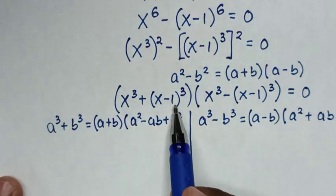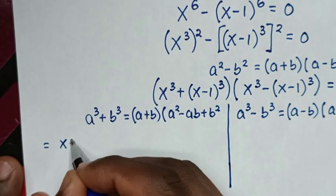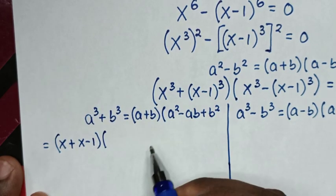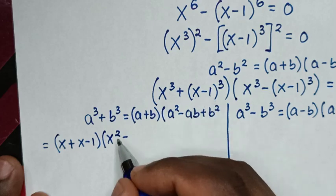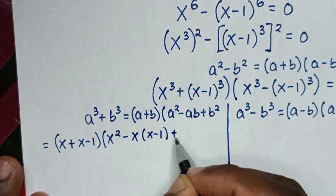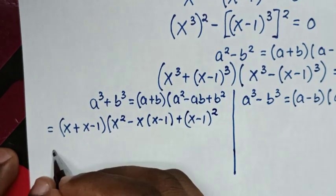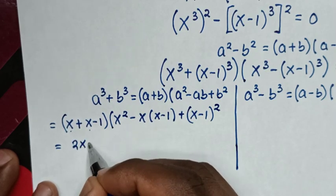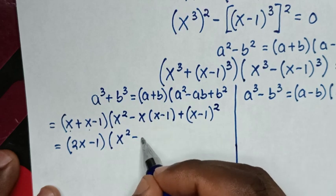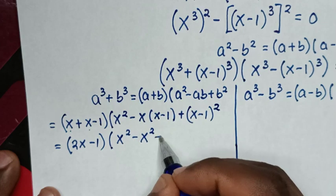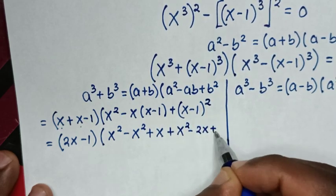From the first part, a plus b is x plus (x minus 1). So it equals (x plus x minus 1) times (a² minus ab plus b²), which is x² minus x(x minus 1) plus (x minus 1)². Expanding: (2x minus 1) times (x² minus x² plus x plus x² minus 2x plus 1).